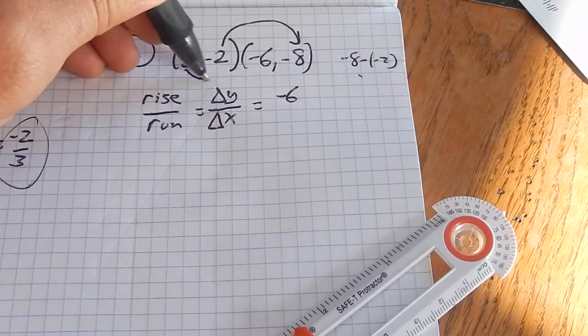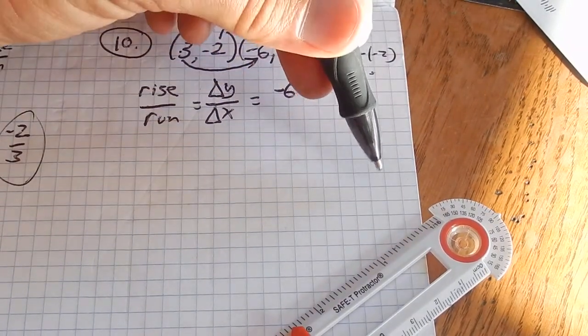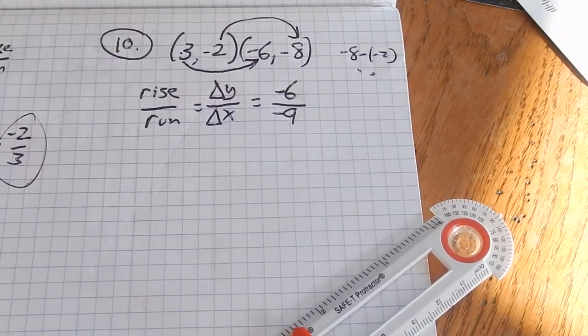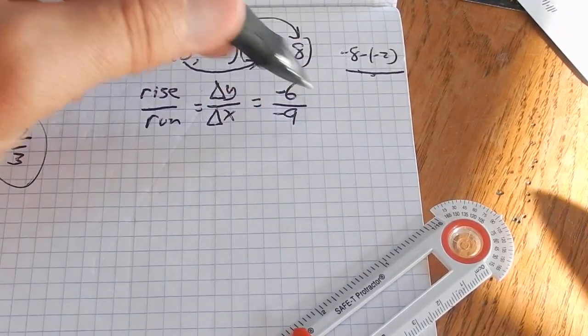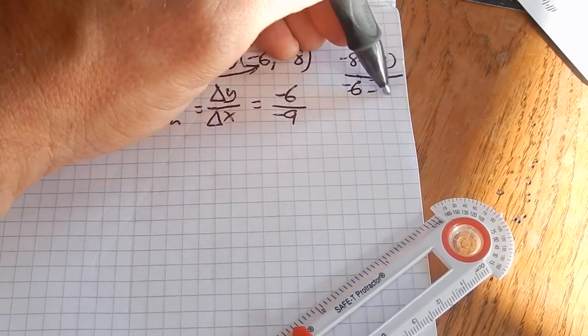I like to think about it. 3 to negative 6. If I start up at 3 and go down to negative 6, I've gone down 9. If you don't want to think about it, you just do negative 6 minus 3.